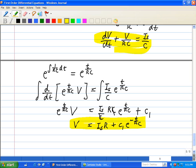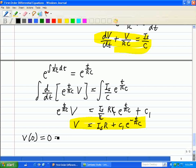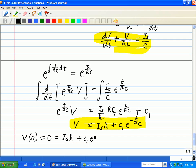Now if we assume an initial condition where the voltage across the capacitor is zero, then we can find the arbitrary constant C1. So that leaves ISR plus C1 E to the minus zero over RC, but that's just one. E to the minus zero over RC is just one, so that implies C1 equal negative IS times R.